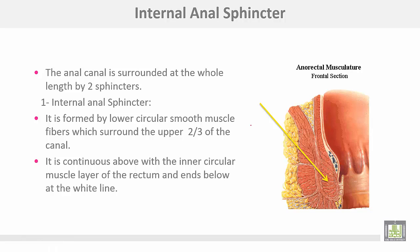The internal anal sphincter surrounds the upper two-thirds of the canal. The canal is surrounded by two sphincters which cover the whole length of the anal canal. The internal anal sphincter is formed by lower circular smooth muscle fibers which surround the upper two-thirds of the anal canal. It is continuous above with the inner circular muscle layer of the rectum and ends below at the white line.